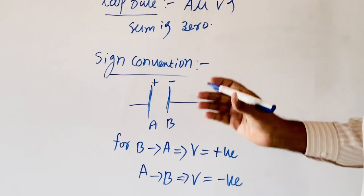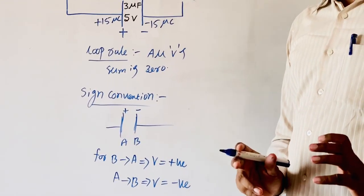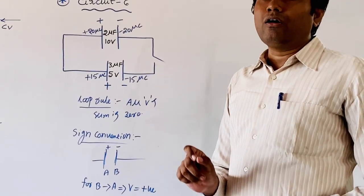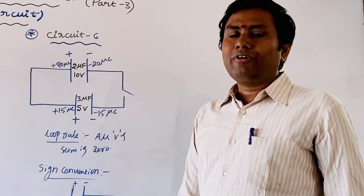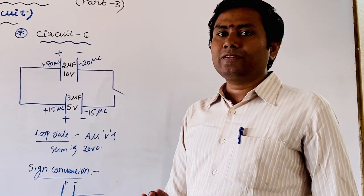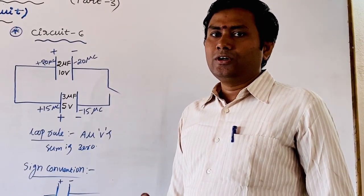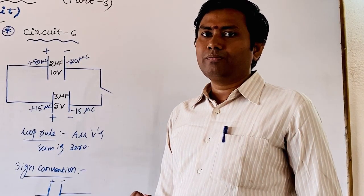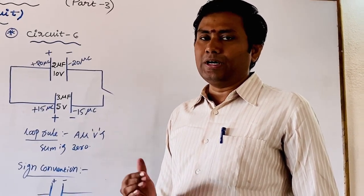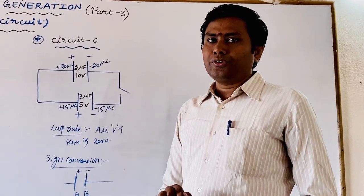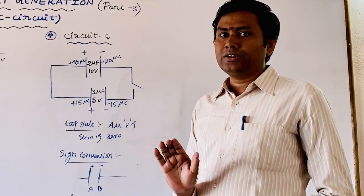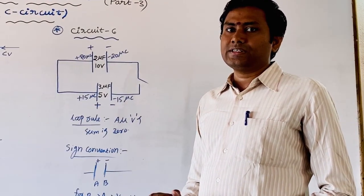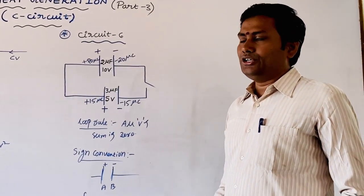In this manner, for whatever loop you have, with however many capacitors, just add all the voltages and set them equal to zero. If traversing negative to positive plate the potential is positive; positive to negative plate it is negative. The sum of all potential differences around the closed loop equals zero.